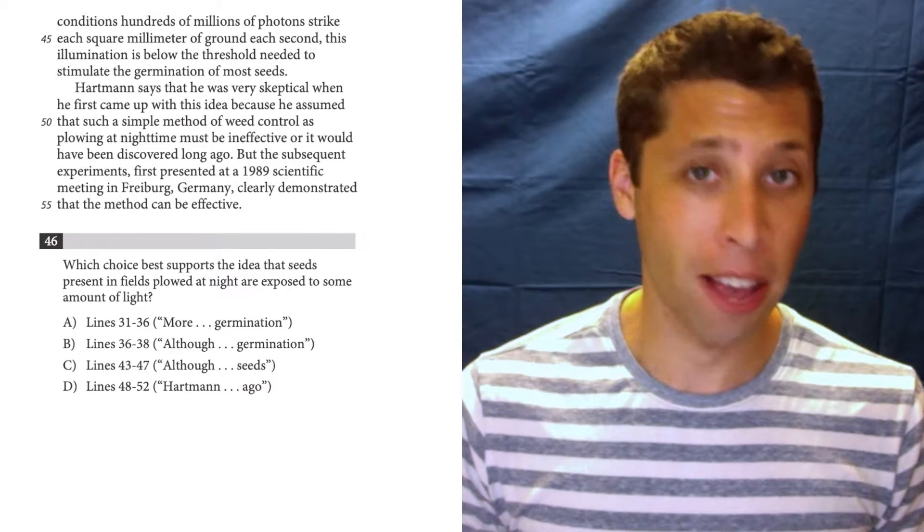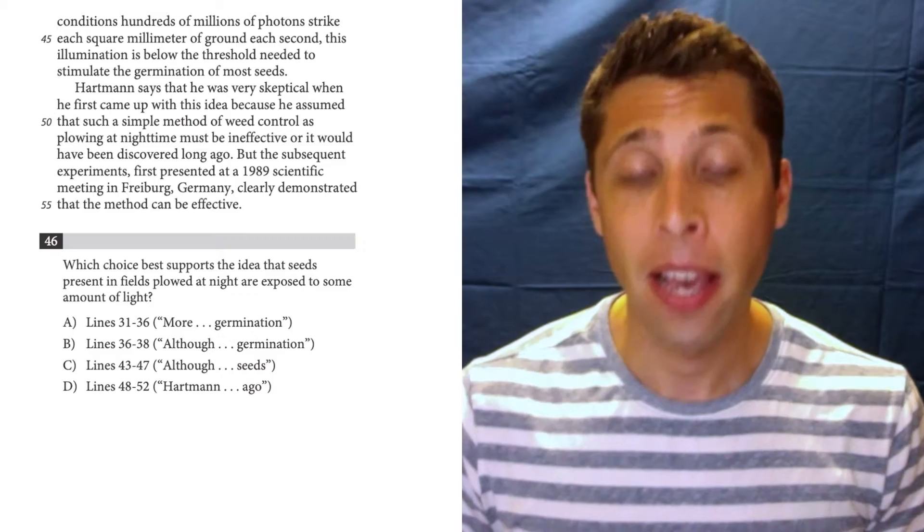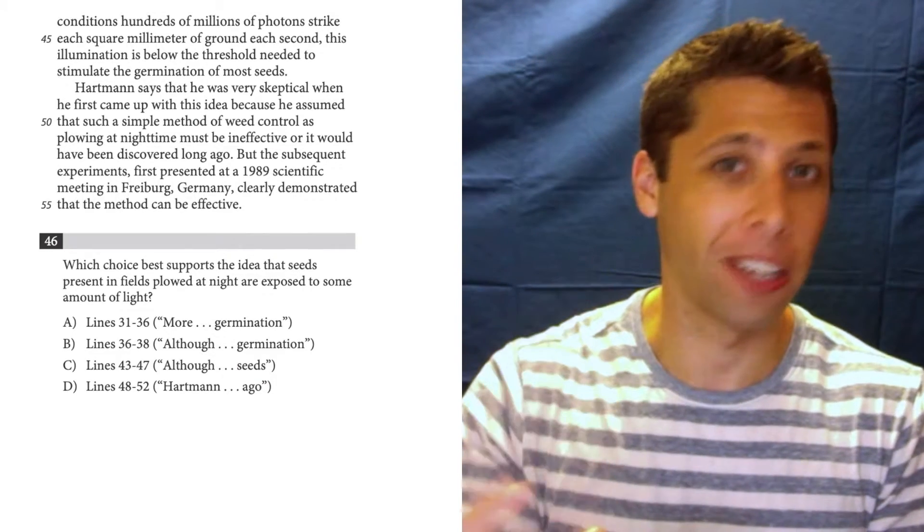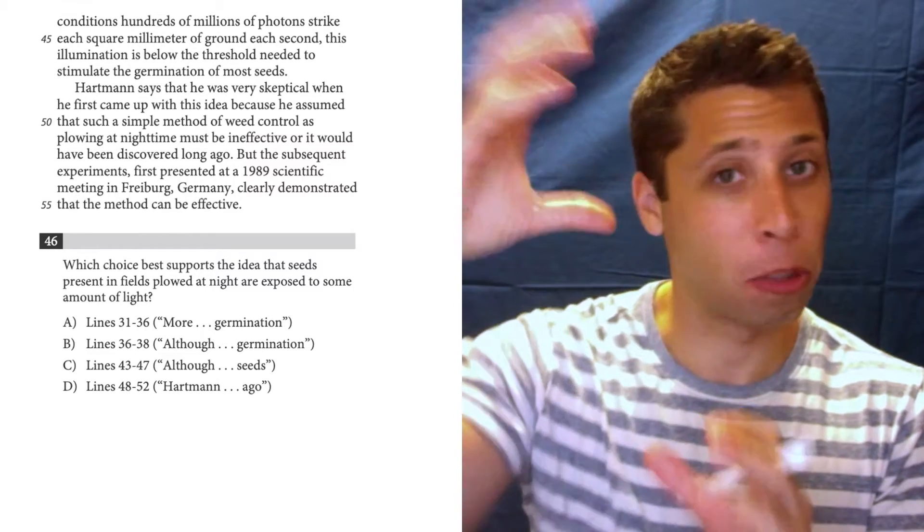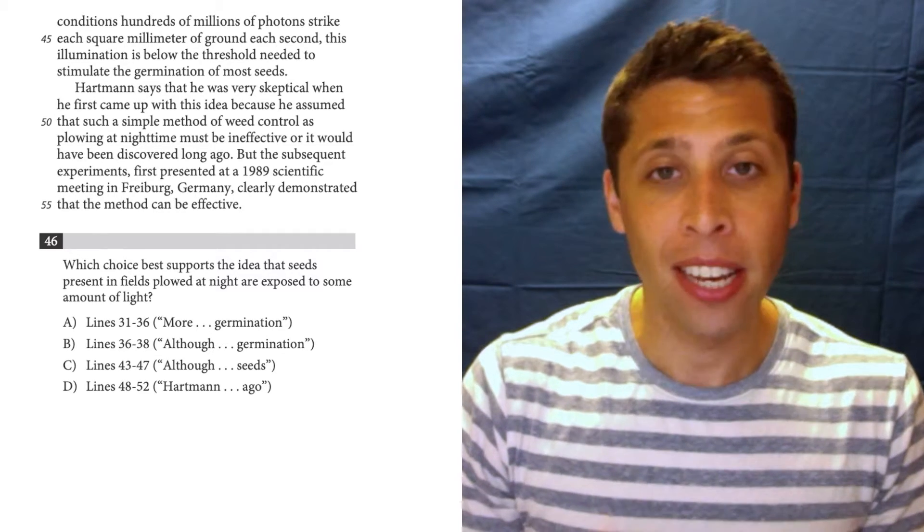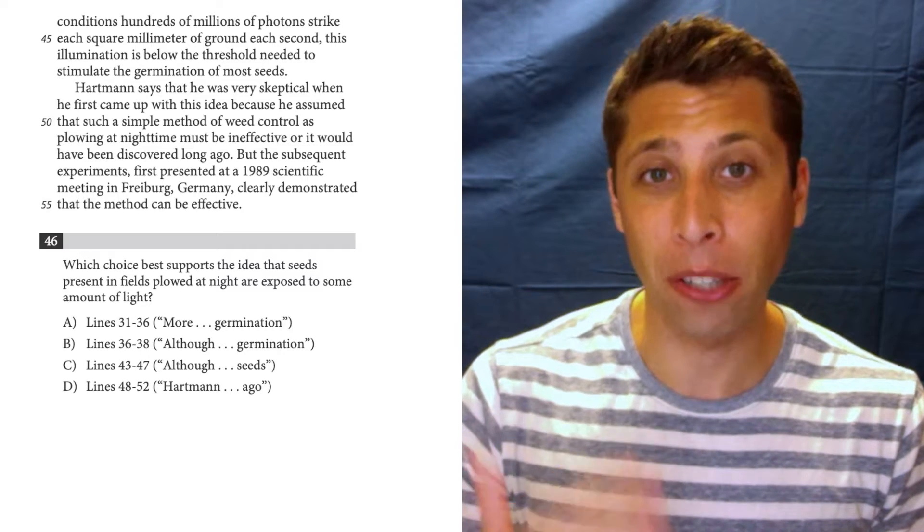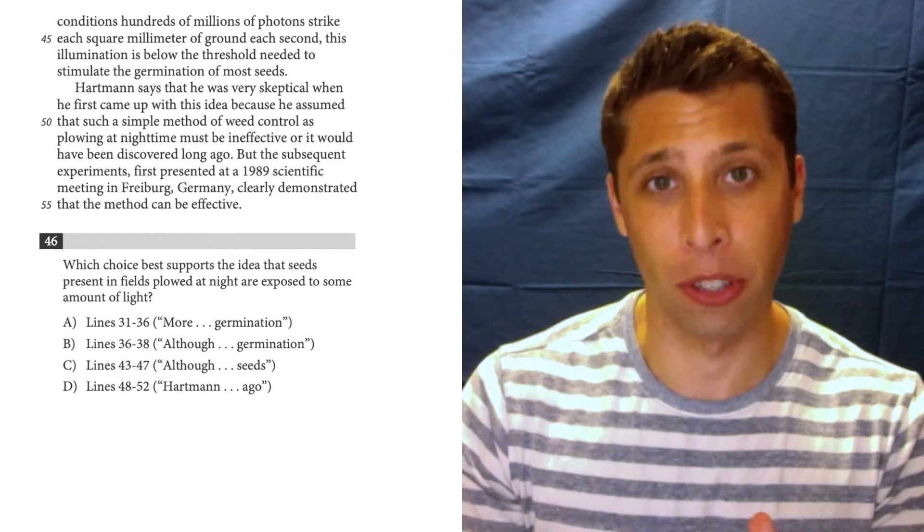This is an unpaired evidence question. These are unusual. There are not usually that many on the SAT. Basically, it's like an evidence pair where we've got an answer and then another question that talks about the line references, except it's almost like they answered the first part for us, so we can just focus on the evidence. And the evidence needs to support the question. So the question is really important here. We need to make sure we know what we're looking for and what our line reference is supposed to do.